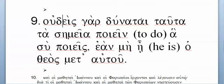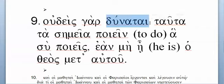So it's 'no one,' and then you'd expect your verb to be a third person singular. As soon as you see that -tai at the end, you know it's third singular by remembering: mi, si, tai, metha, este, entai — so tai is third singular. And you should remember the verb as coming from dunamai. As soon as you say dunamai, you know that verb is deponent, so even though it has a passive ending, you're going to translate it actively.